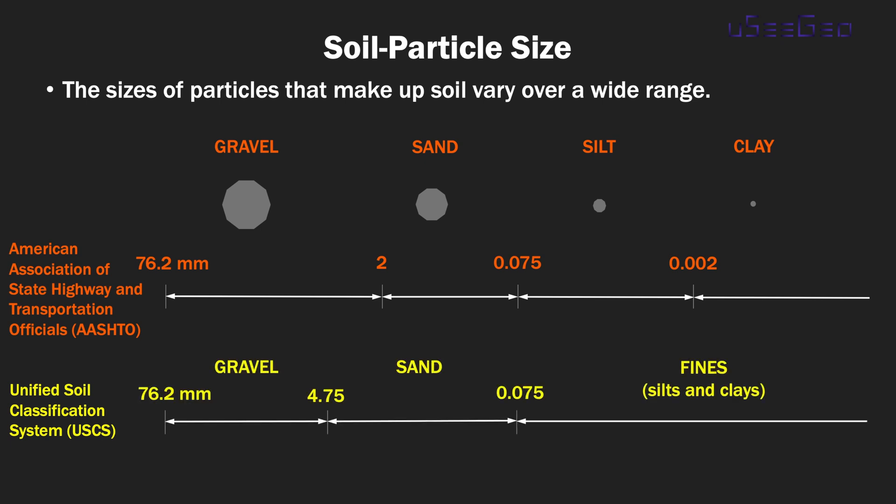For the Unified Soil Classification or USCS system, soils are grouped into three types. For gravels, it's between 76.2 and 4.75 mm. Sands are particles between 4.75 and 0.075 mm. And fines, which include silts and clays, are particles smaller than 0.075 mm. Gravels and sands together are called coarse-grained soil, and fines are, of course, silts and clays.